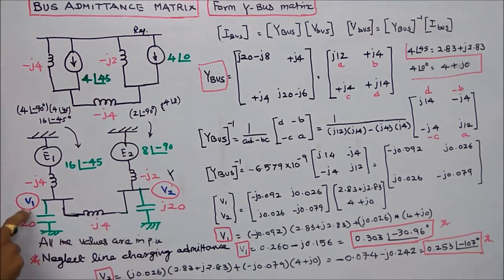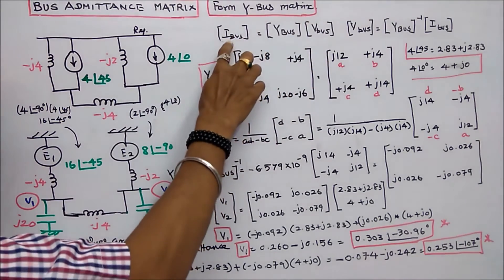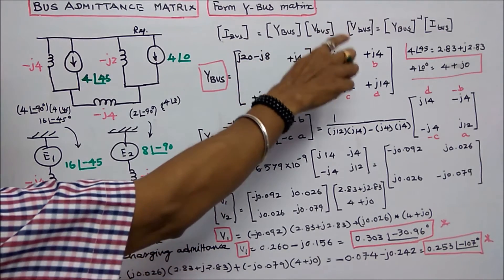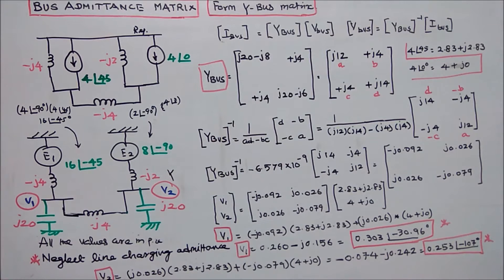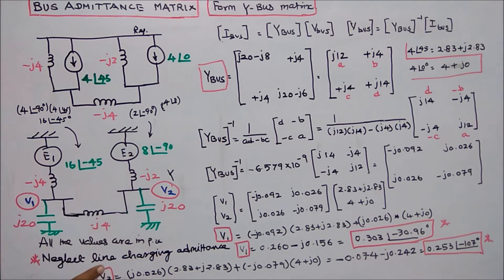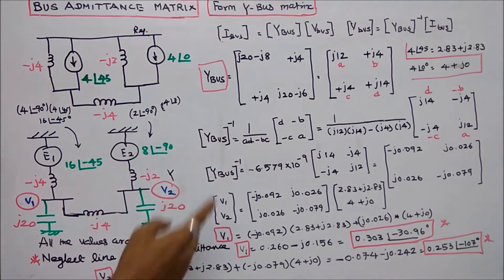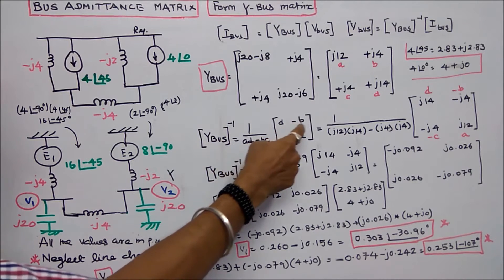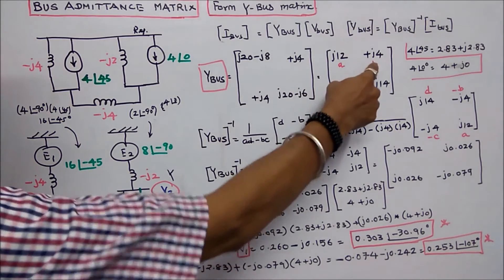The second step is to find V1 and V2. I-bus equals Y-bus times V-bus, therefore V-bus equals Y-bus inverse times I-bus. So V1 and V2 are found from the Y-bus inverse. The inverse formula is 1 over (AD minus BC), times the matrix [D, minus B; minus C, A], where A, B, C, D are the matrix elements.